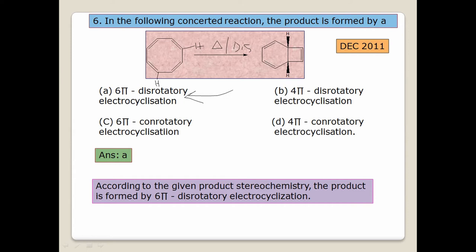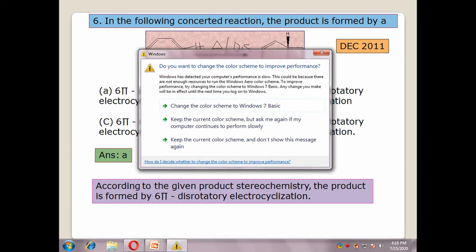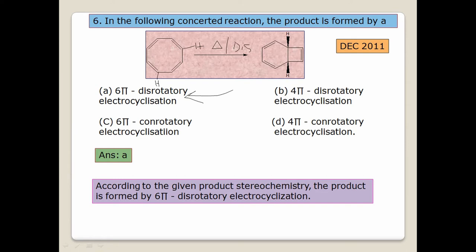We decided it is a disrotation, but how do we confirm it is 6π or 4π? For thermal disrotation, only the 6π electron system is allowed. For a 4π electron system, thermal conrotation is allowed. Since the two hydrogens are opposite and we are getting a cis product, 4π is eliminated — because thermally for 4π, conrotation gives a trans product. So 4π is eliminated; 6π with disrotation is confirmed.